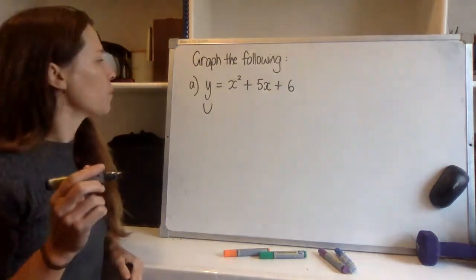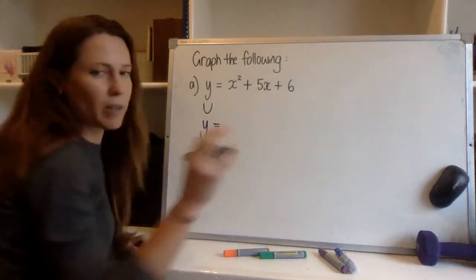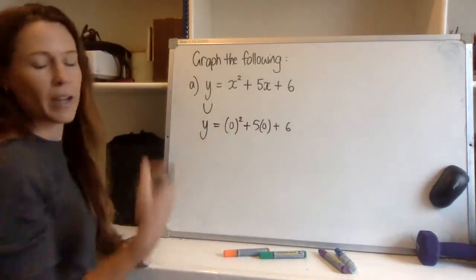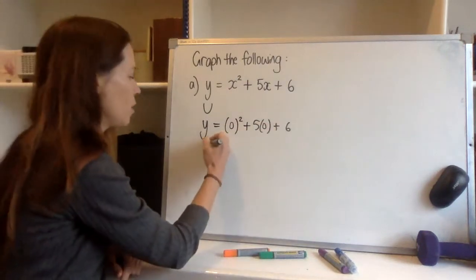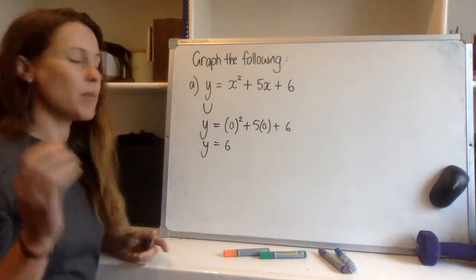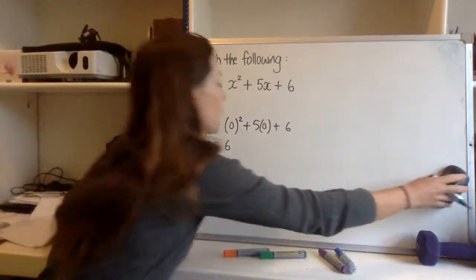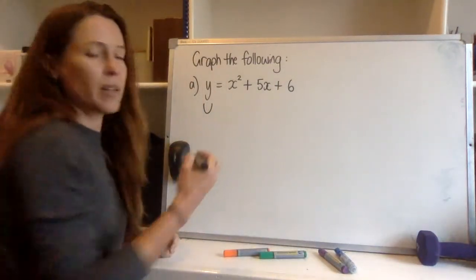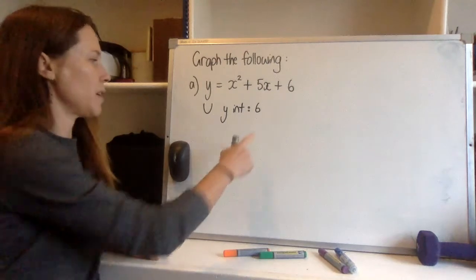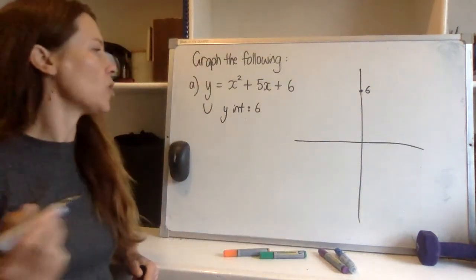What about the y-intercept? To find the y-intercept we need to let x equal zero. Let x equal zero and write that whole line out. We get nothing plus nothing plus six — y equals six. Now if x is zero and y equals six, I've found that the y-intercept is at six. Find the six on your y-axis and put a dot — your graph goes through there.